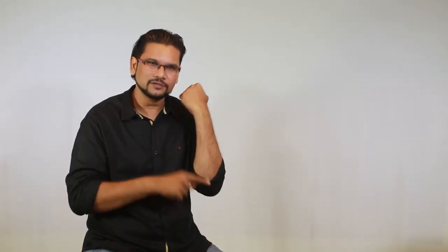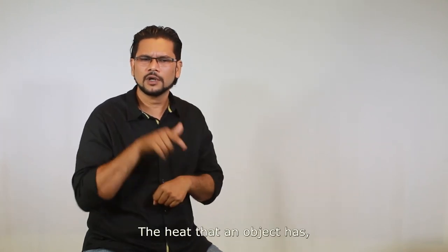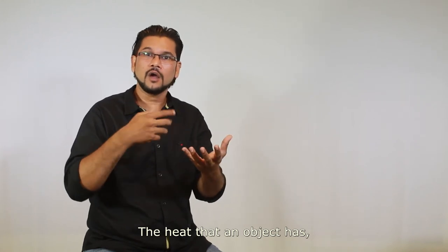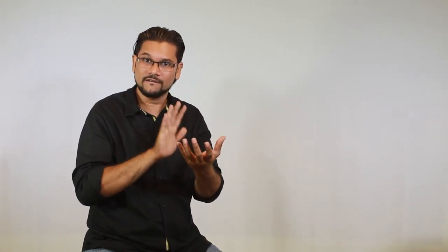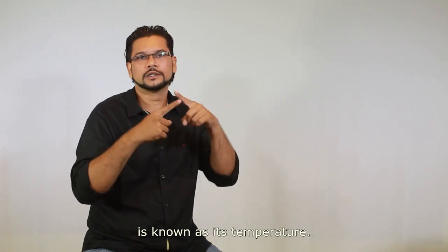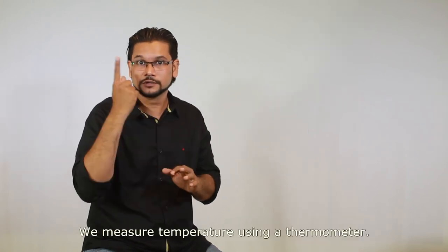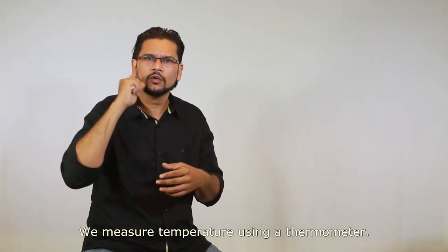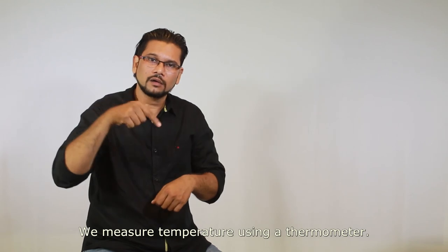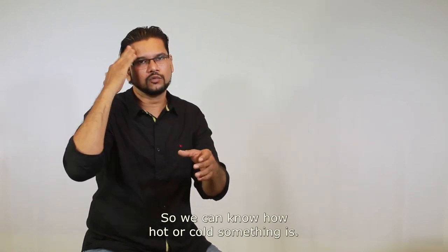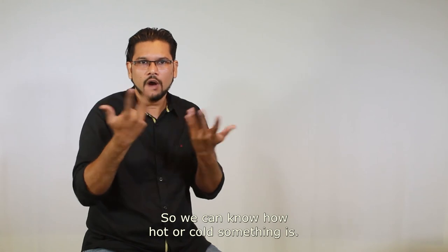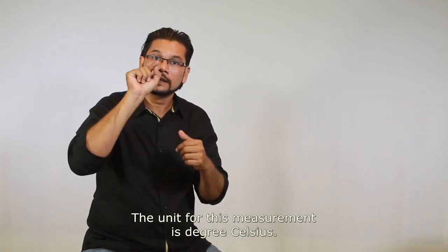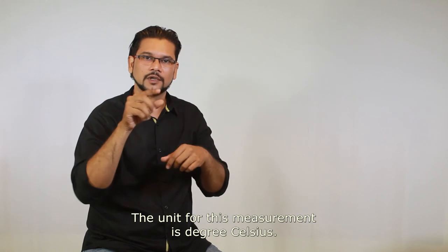Now the last one is temperature. The heat that an object has is known as its temperature. We measure temperature using a thermometer. So we can know how hot or cold something is. The unit for this measurement is degree Celsius.